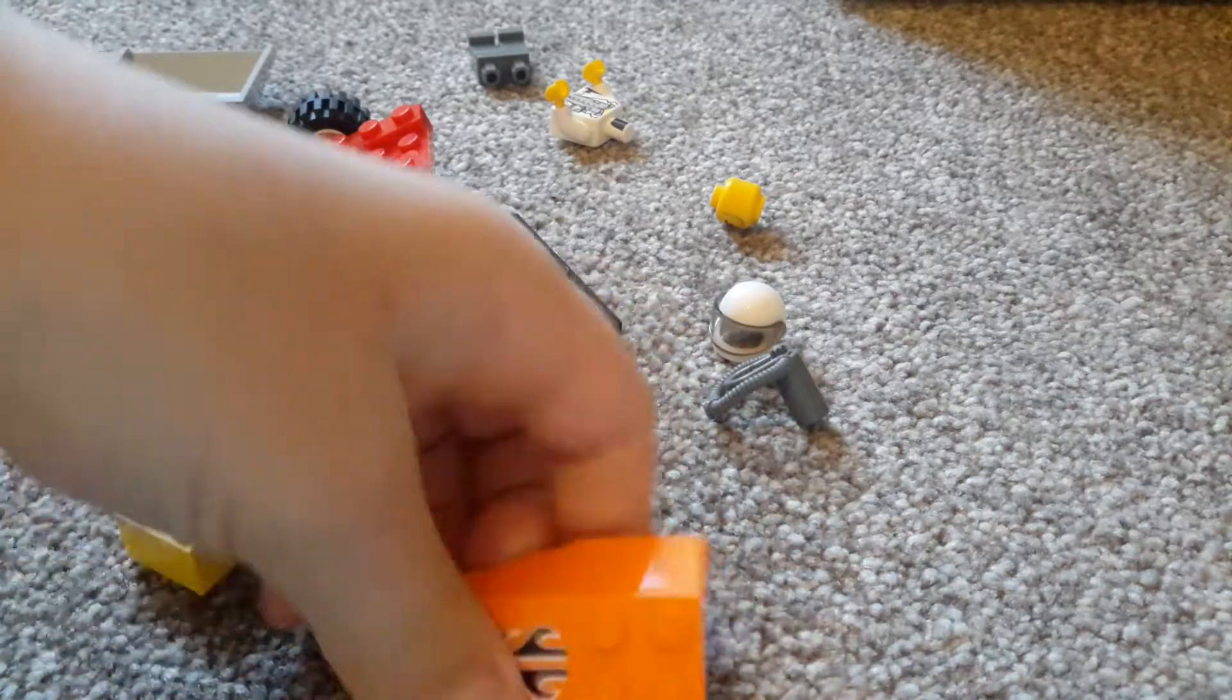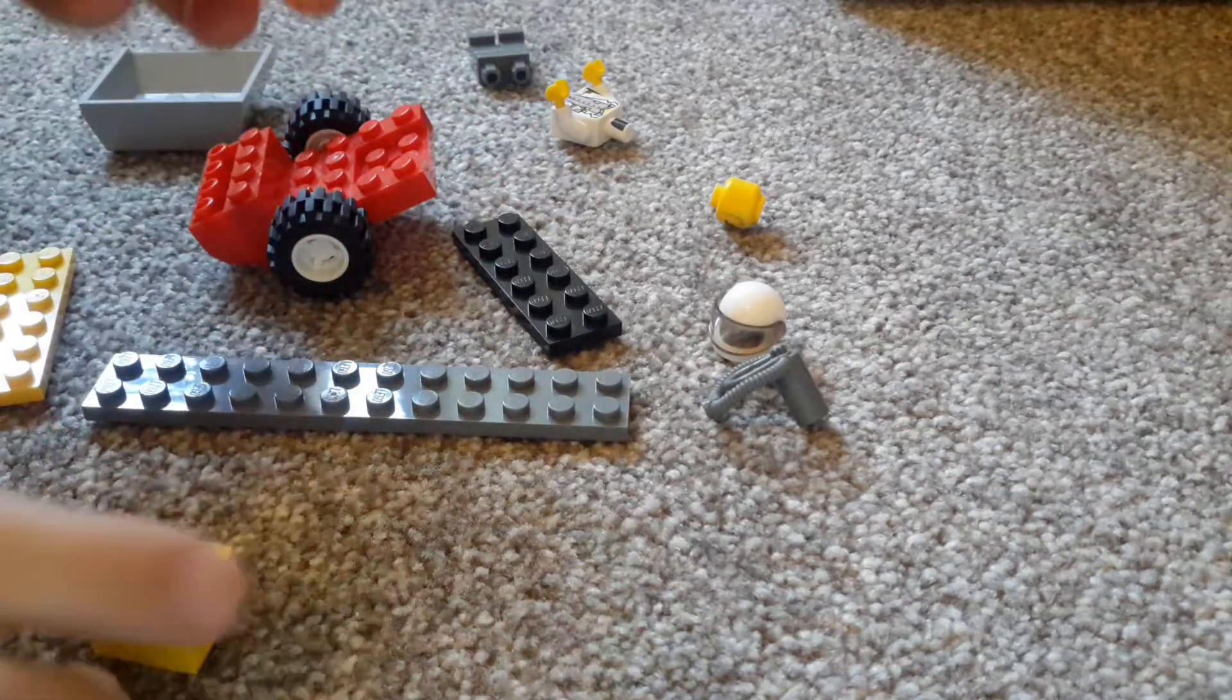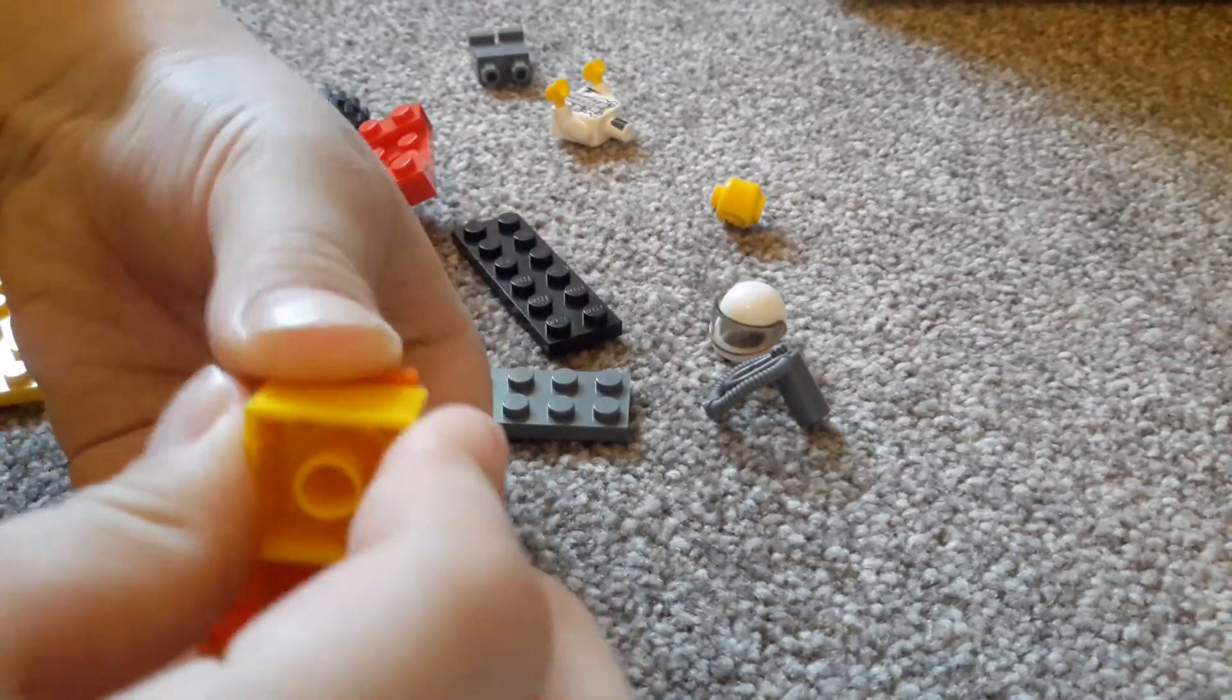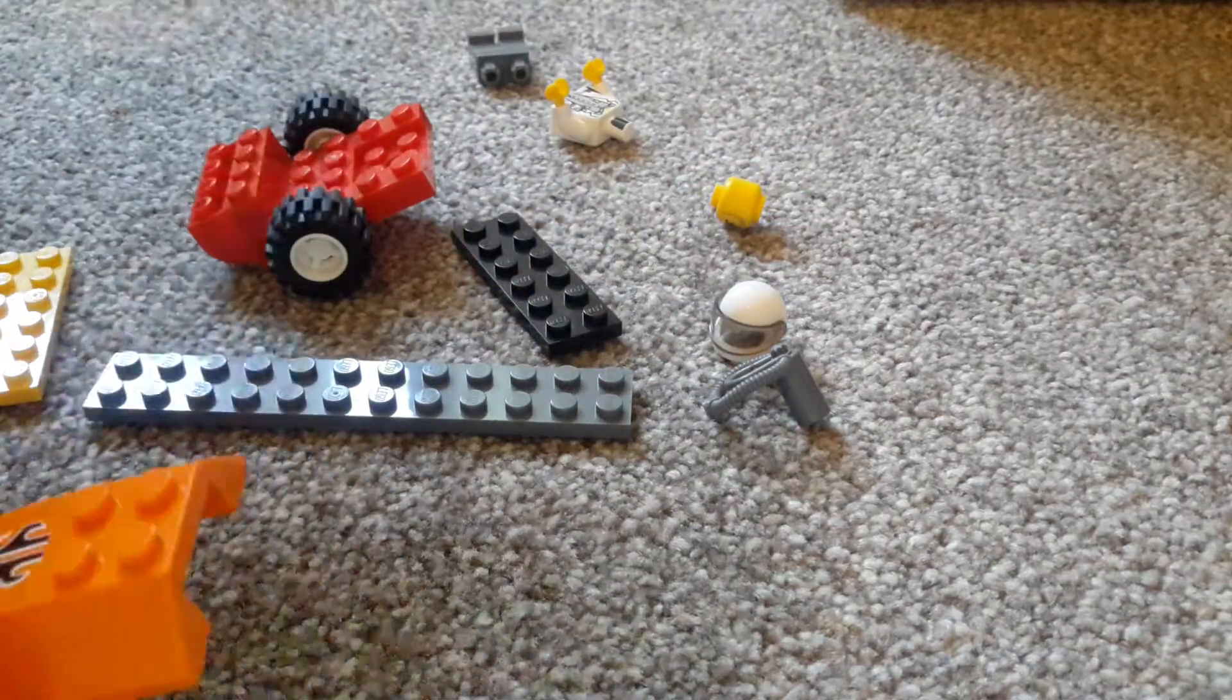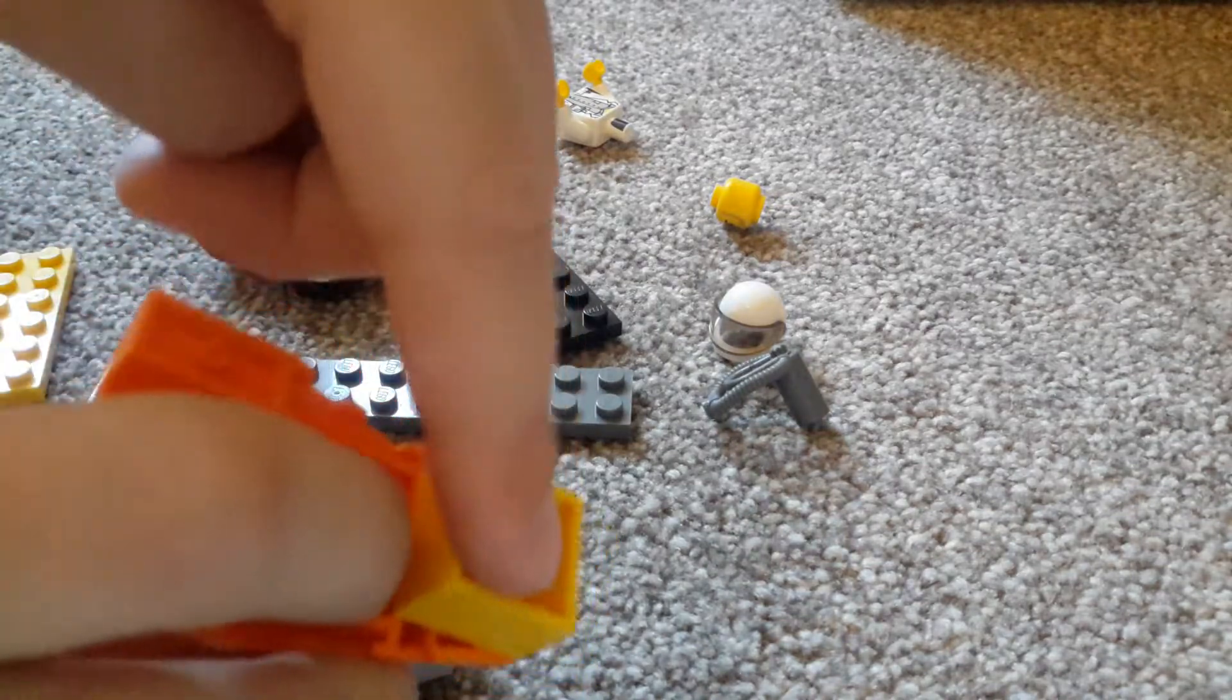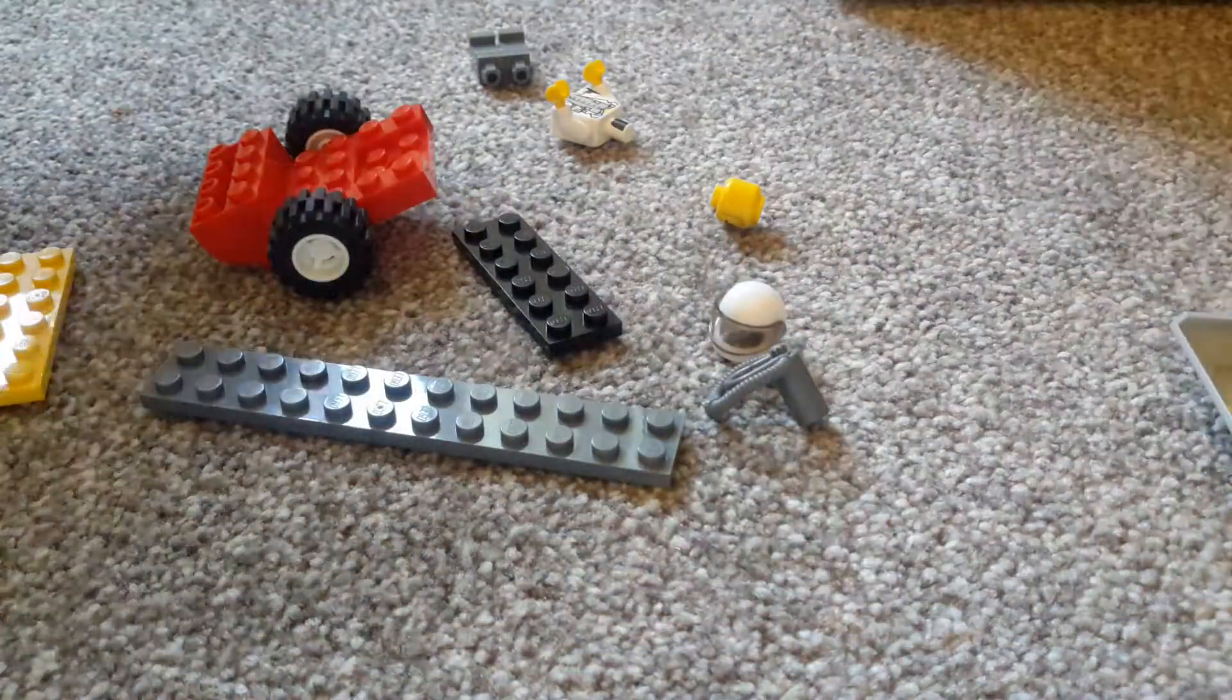So first I'm going to start with this piece. And then I'm going to put this block on it, on the front of it. Then next we're going to get this piece and put it on the little dots to attach it on. Next we're going to go to a different step.